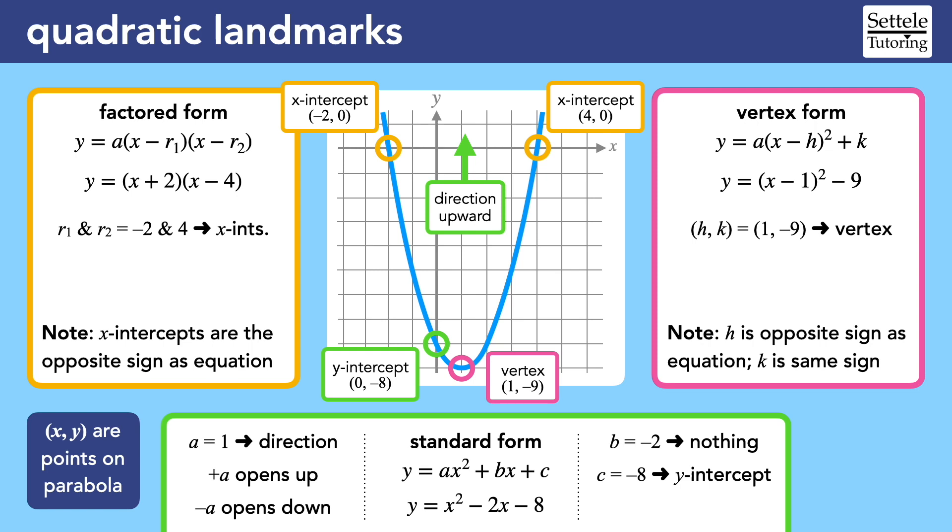Before we move on, I want to stress that the SAT often talks about these quadratic landmarks using other vocabulary. For example, if we have a story along with our equation, the y-intercept might be described as the starting point or initial value. The x-intercepts are sometimes called roots, zeros, or solutions, and the parentheses terms themselves are called factors.